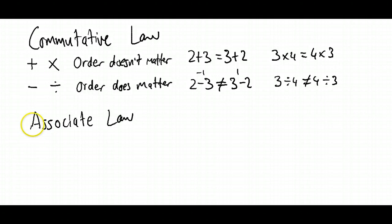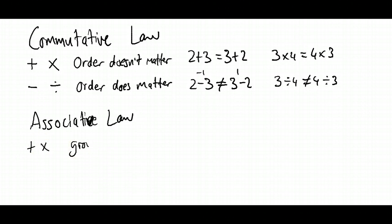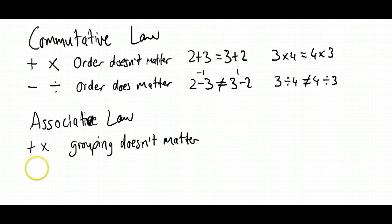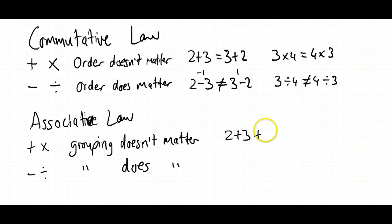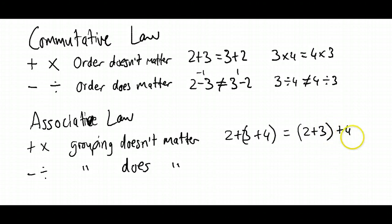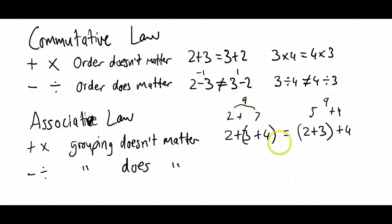The associative law is kind of similar but looks a little different. It says that for addition and multiplication, grouping doesn't matter. But for subtraction and division, grouping does matter. For example, 2 plus (3 plus 4) gives the same result as (2 plus 3) plus 4 — both equal 9. The same is true for multiplication: (4 times 5) times 3 equals (3 times 4) times 5 — both equal 60. So it doesn't actually matter where you put the brackets for addition and multiplication.